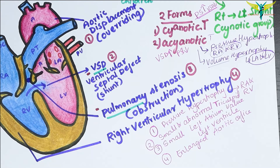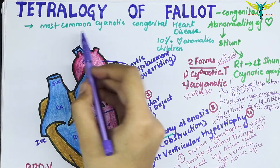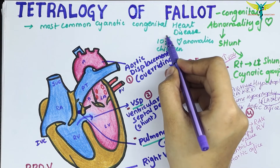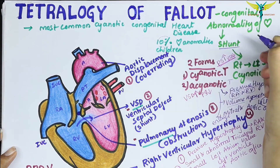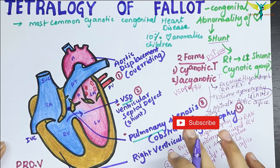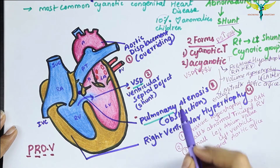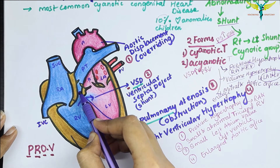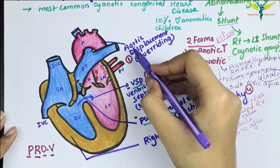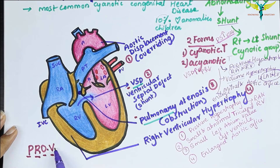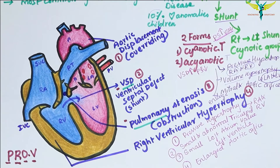Another effect in the acyanotic type is enlargement of the mitral and aortic orifices. To summarize: Tetralogy of Fallot is the most common cyanotic congenital heart disease, accounting for 10 percent of heart anomalies in children. It is a right-to-left shunt type of congenital anomaly. Its four features are remembered by the mnemonic PROV — P for pulmonary stenosis, R for right ventricular hypertrophy, O for overriding of the aorta, and V for ventricular septal defect.